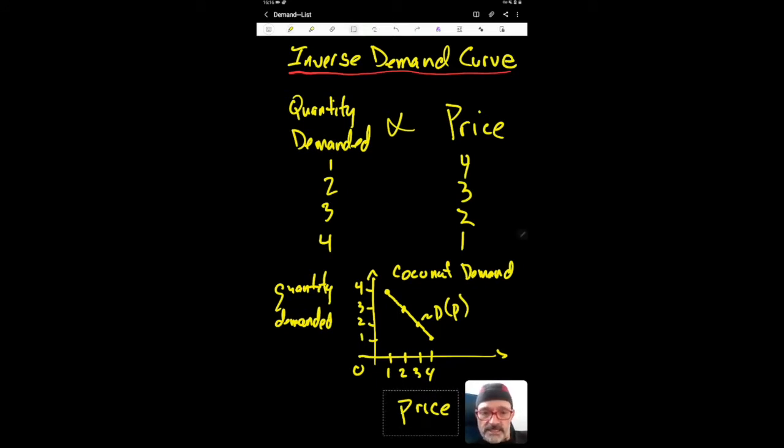Instead, they place price on the y-axis and quantity demanded on the x-axis. To properly account for this, the demand curve is no longer a function of price, but a function of quantity demanded.